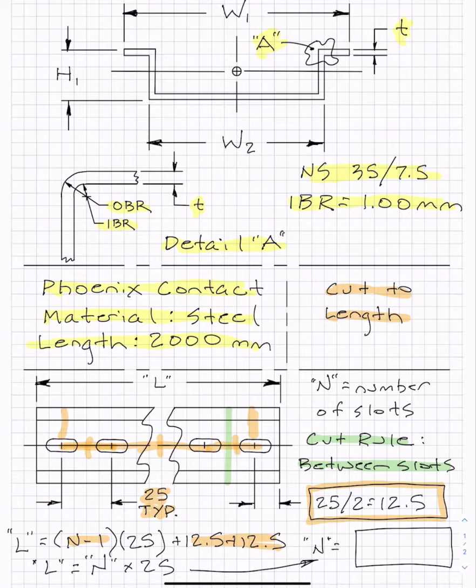So if I solve that for N, I'll see that the length of the number of slots is just going to be L divided by 25. And we're going to use that for our parametric model we're going to build so that we can correlate the length of the N rail, whatever your length happens to be, to the number of slots.